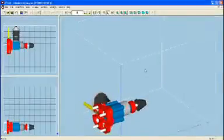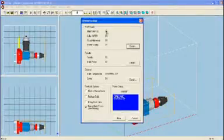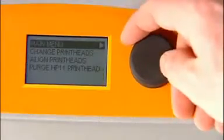Simply import your 3D data file into our Z Print software, position as desired, and follow the prompts. The system automatically checks supplies and printer readiness, ensuring you always have the right amount of materials to complete the job.